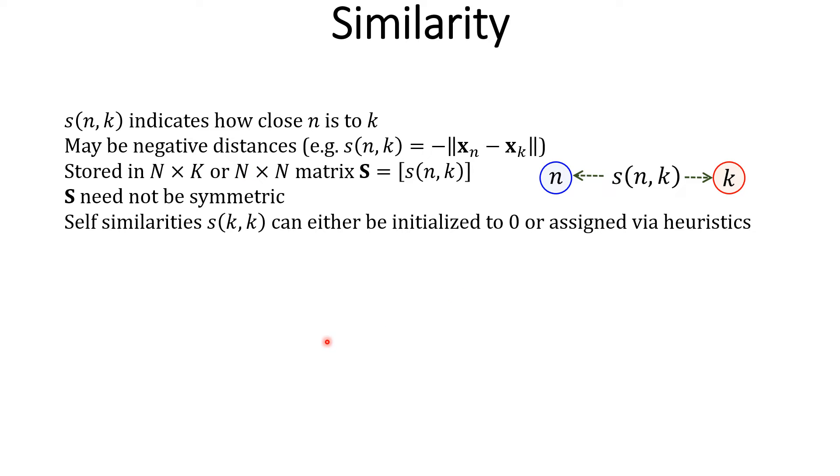Self-similarities can either be initialized to zero or assigned using some heuristic approach. And higher self-similarity makes k more likely to become an exemplar.